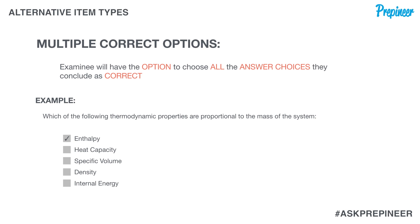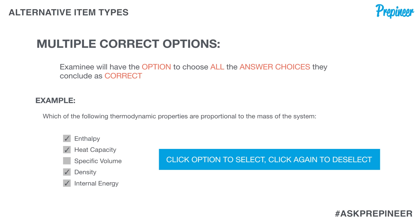Our job is to collect all the answer options that we feel are correct. As you can see on your screen, we're going to click each selection that we want. Importantly, we can also deselect — if we determine that one of our selections is incorrect, we simply click once again on that check mark to deselect it, and then we can submit our question to be graded.